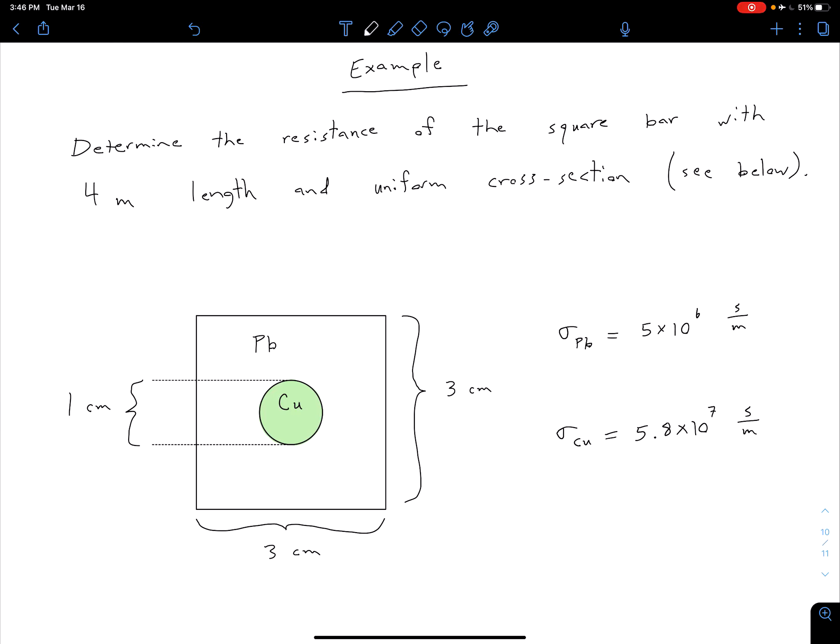I've copied over here our conductivities for these two materials from Appendix B in the textbook. Our conductivity of lead is 5 times 10 to the 6th Siemens per meter, and our conductivity of copper is 5.8 times 10 to the 7th Siemens per meter.